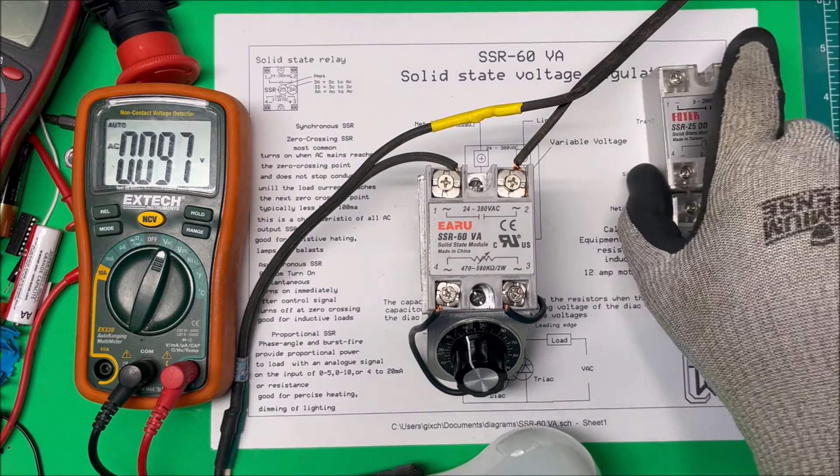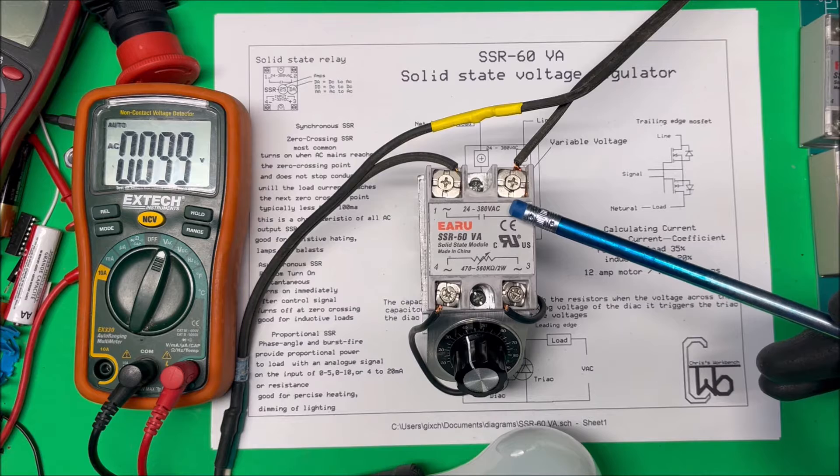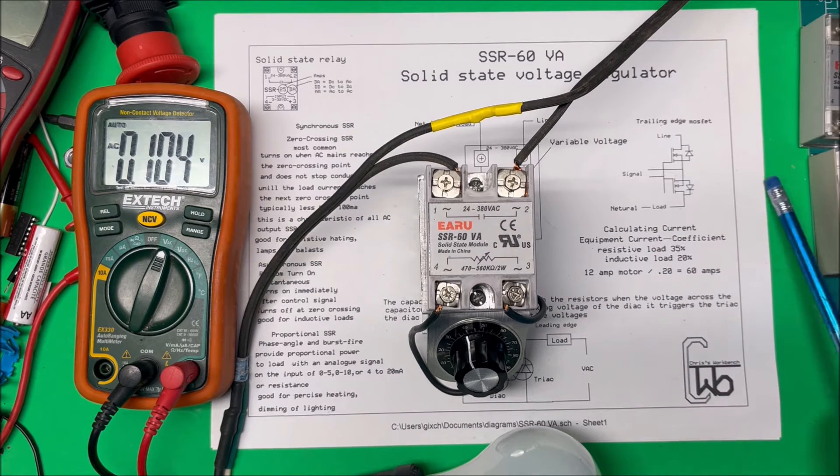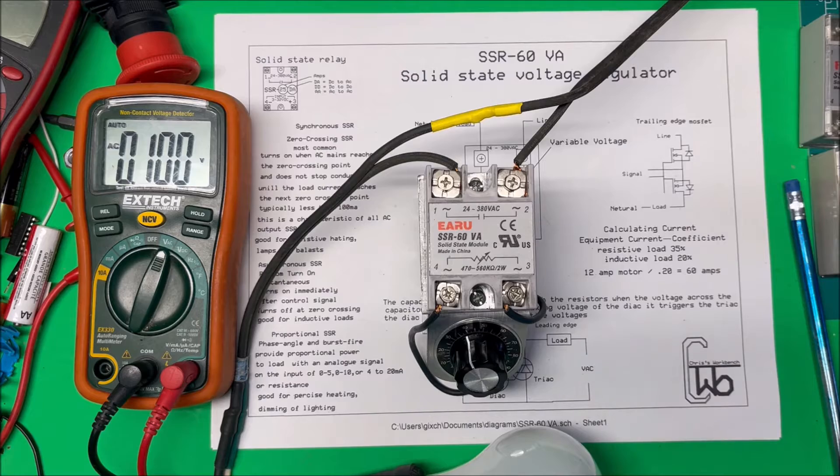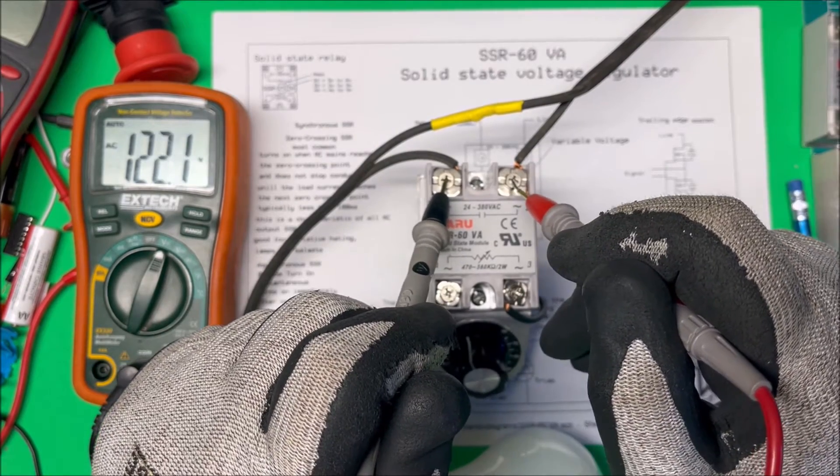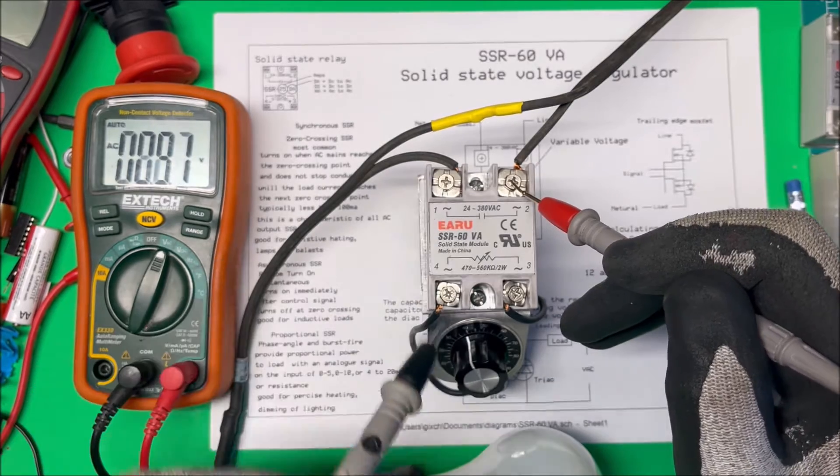But this one here varies the load voltage, the voltage to the load, and it does that through the potentiometer there. Let's take a look at the voltage. It's live right now and if I put my meter on here you can see it's 120.22 volts. I got 120 volts here.